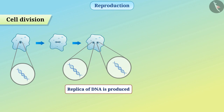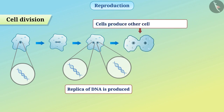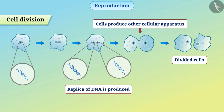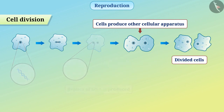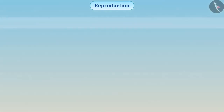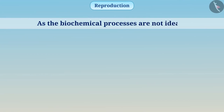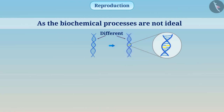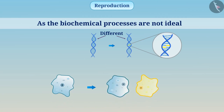The replica of DNA in the cell is produced by various chemical reactions. After producing the replica of DNA, cells produce other cellular apparatus and then divide such that each cell gets DNA. As the biochemical processes are not ideal, we can see some differences between the replicated DNA and the parent DNA. Because of these variations, every organism in the population has some unique features which makes it distinct in the population — we call it diversity.